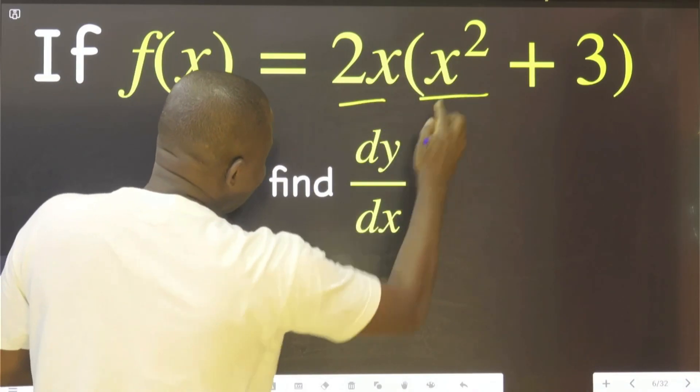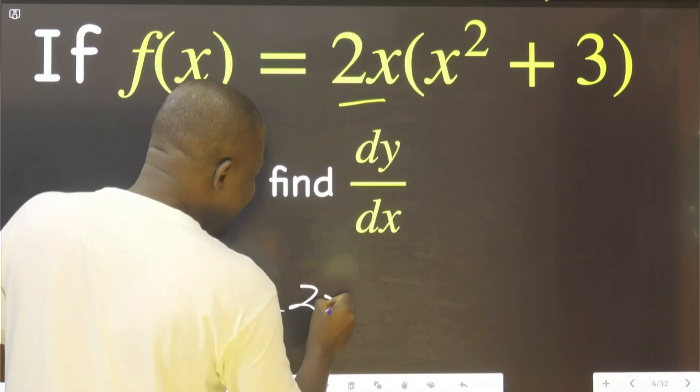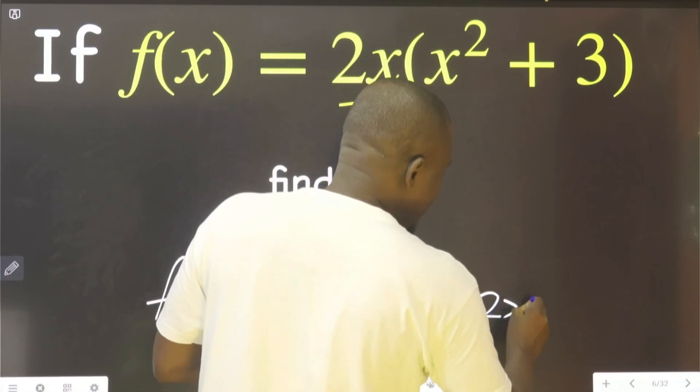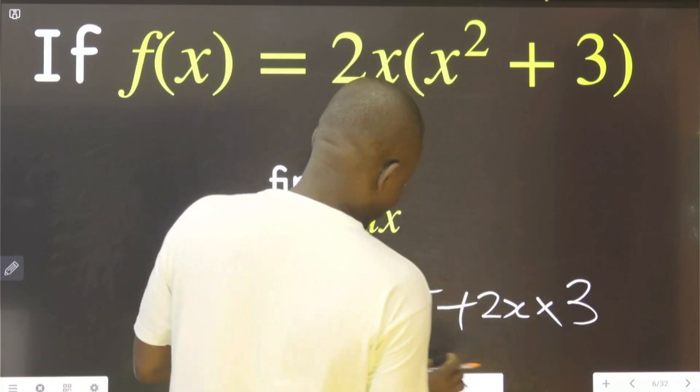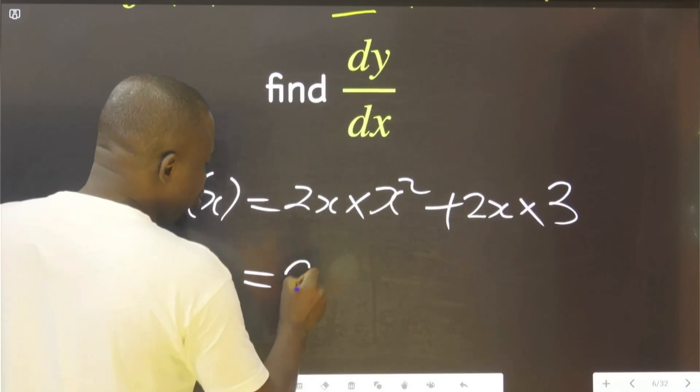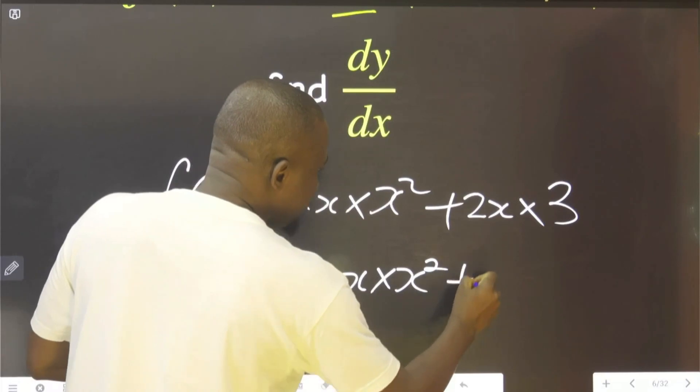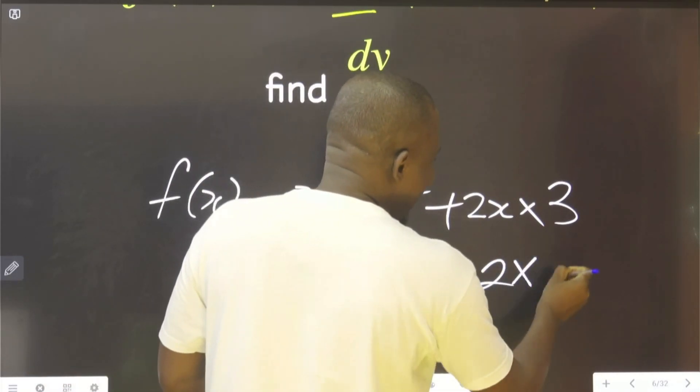That is to say, 2x multiplied by x² plus 3. This is 2x multiplied by x raised to power 2, then 2x multiplied by 3. This is simply 2 multiplied by x multiplied by x² plus 2 multiplied by x multiplied by 3.